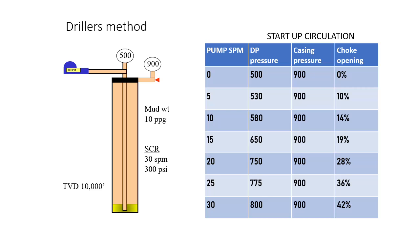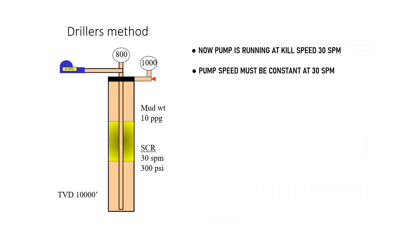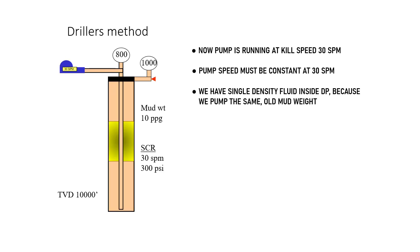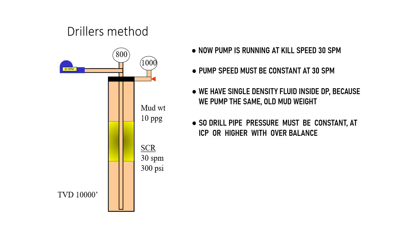In this example, we see the pump speed is increased from 0 to 30 spm, and the choke is also opened from 0% to 42%, while maintaining casing pressure constant. After reaching 30 spm, the pump must run at constant speed. We always have old mud inside the drill pipe, so the drill pipe pressure is also constant at ICP, or initial circulating pressure.